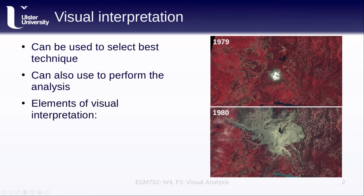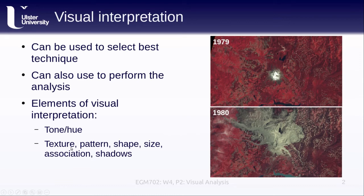When we're doing this, we're going to keep in mind the different elements of visual interpretation. For example, changes in tone or hue. You can see the change from the vegetation, colored red in the 1979 image, to the more gray, tannish color of the volcanic material in the 1980 image. But we also see differences in things like texture or pattern, the shape of different things, the size of objects, what they're associated with, or even shadows. All of these different elements of visual interpretation that you hopefully remember from EGM 713.